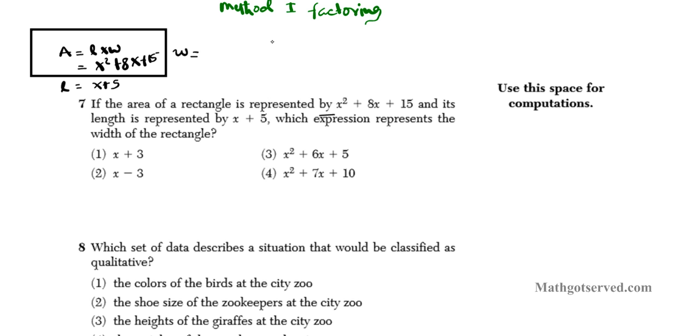Method one is factoring. So we are going to factor the expression x squared plus 8x plus 15 as a quadratic trinomial. So we are going to use the x game, or the AC method. AC is 15, and B is 8. Because A is 1, B is 8, C is 15, A times C is 15, B is 8. So what two numbers multiply to give you 15 and add to give you 8? 3 times 5 works perfectly for this. So we have x squared plus 3x plus 5x plus 15.